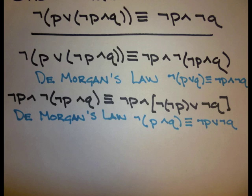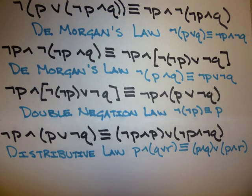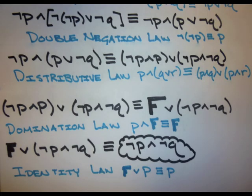We can further simplify the expression by using De Morgan's law again on the left side. On the left we can further simplify by observing a double negation and simplifying the negation of not P to be equivalent to P. On the right side we take the negation of P and (P or negation of Q) and turn that into (not P and P) or (not P and not Q). Using the domination law, P and false is always equivalent to false. The identity law tells us that false or something is always equivalent to that something — in this case, not P and not Q.